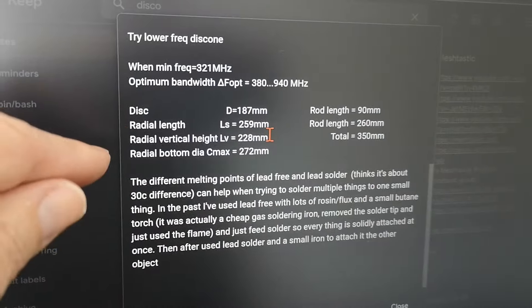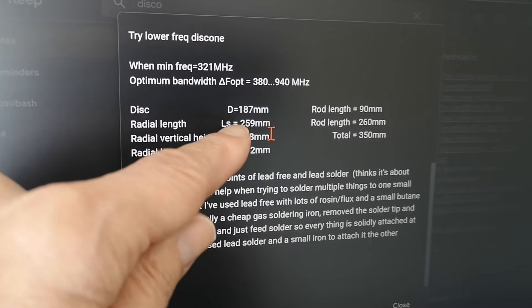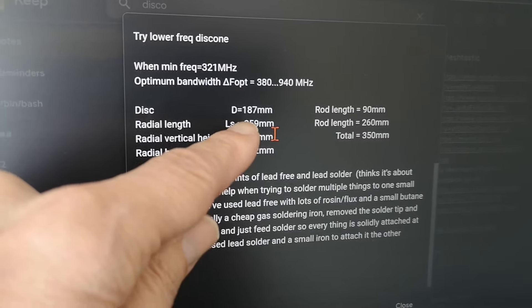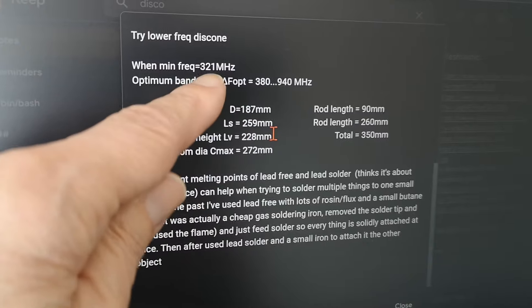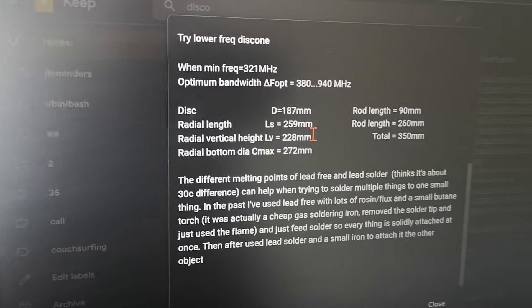So I've come out with a disc diameter on top of 187mm, the length of the radials, or the lower element lengths, is 259mm, and this gives a minimum frequency, theoretically, of 321 MHz, so it should work nicely at 432.